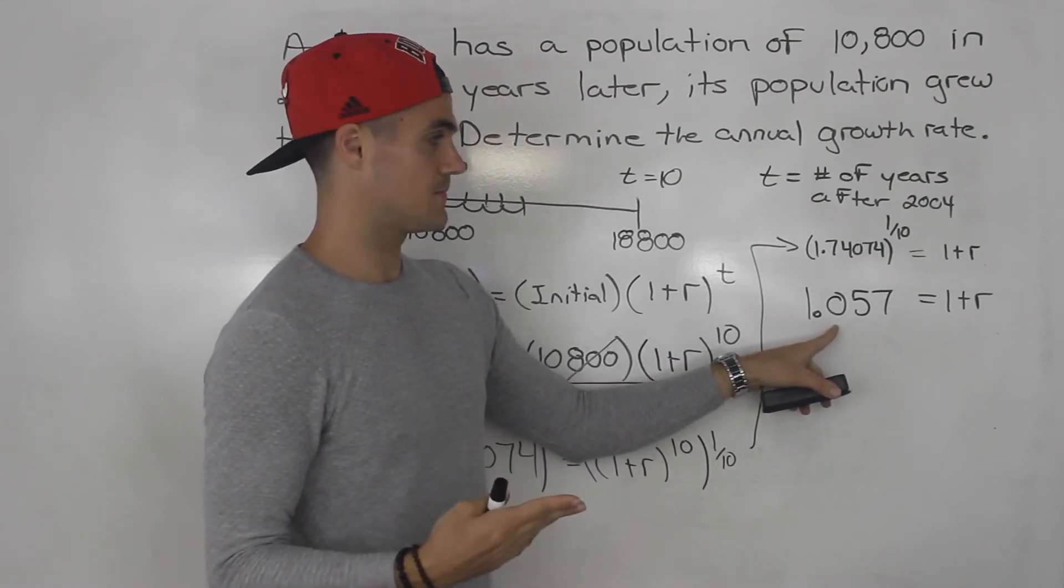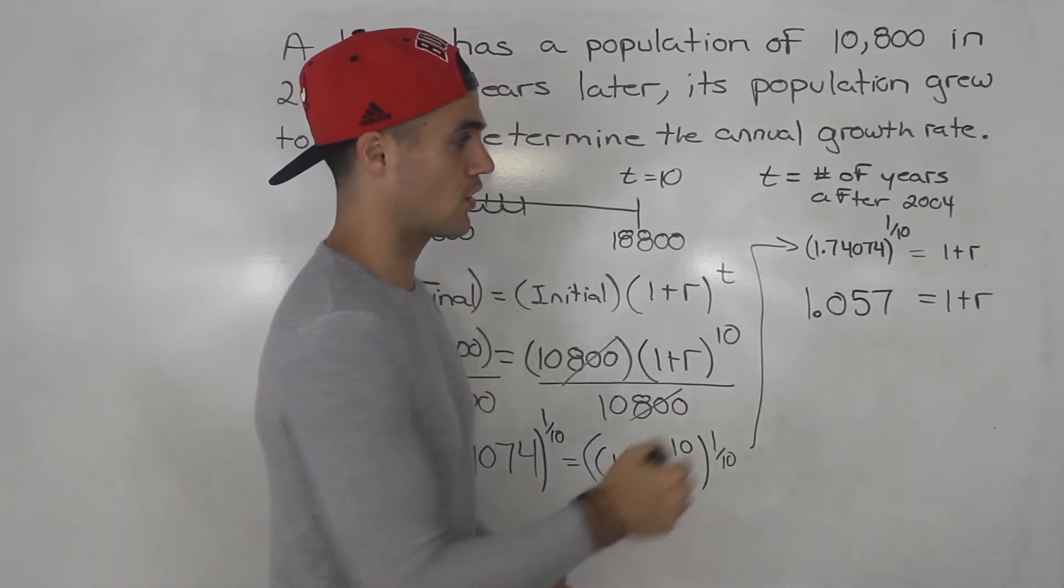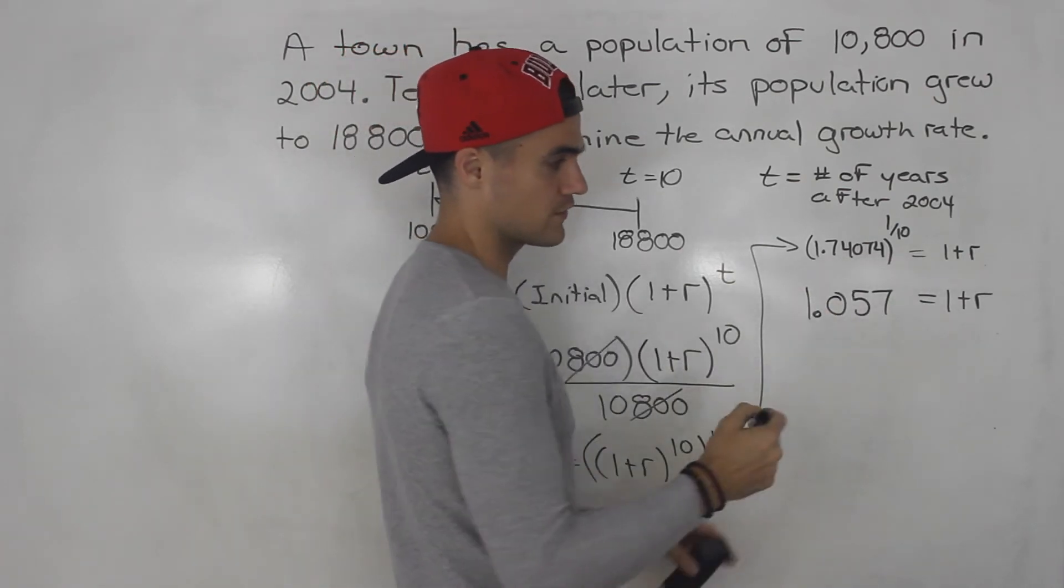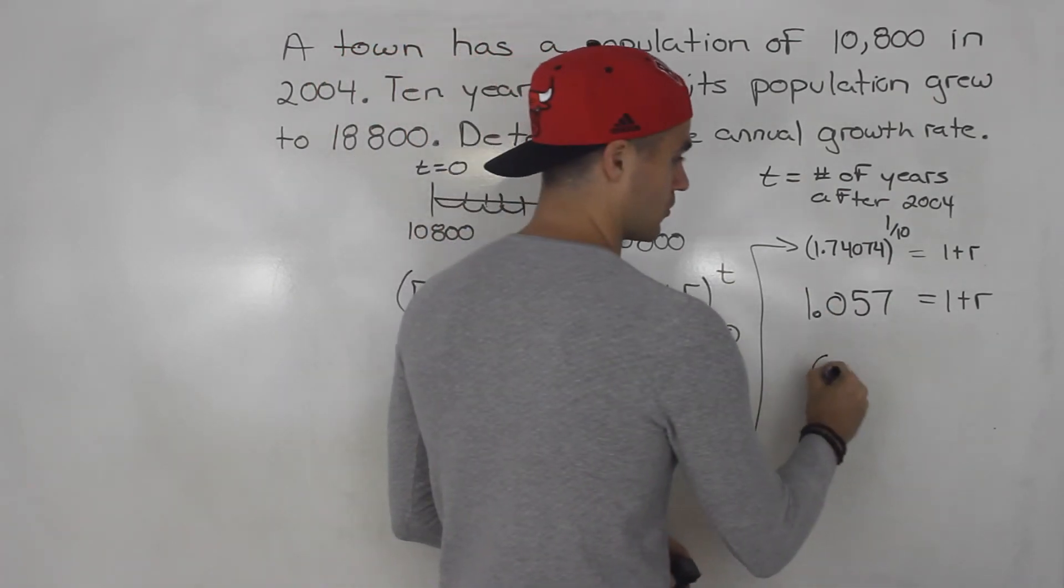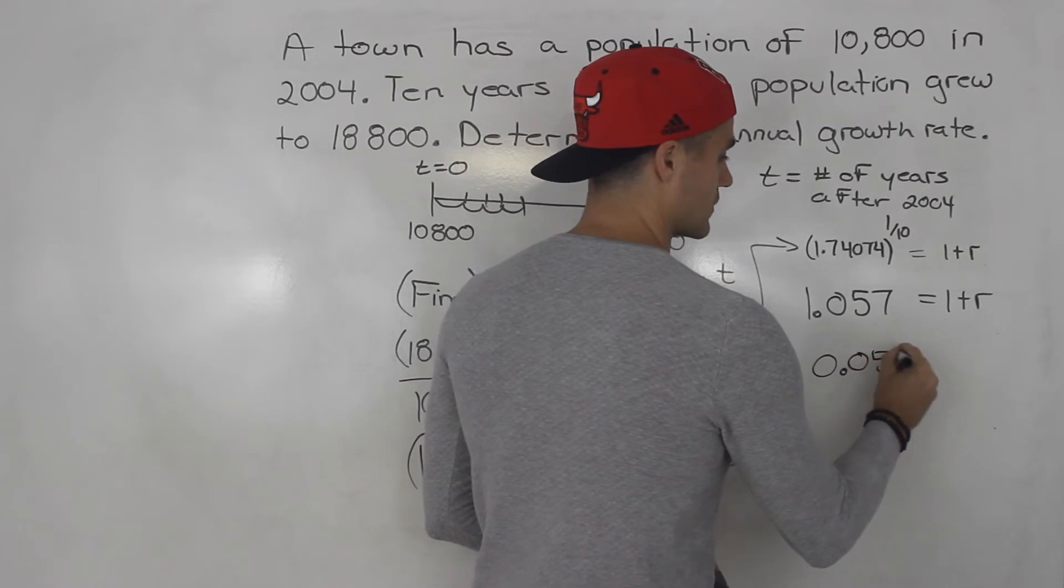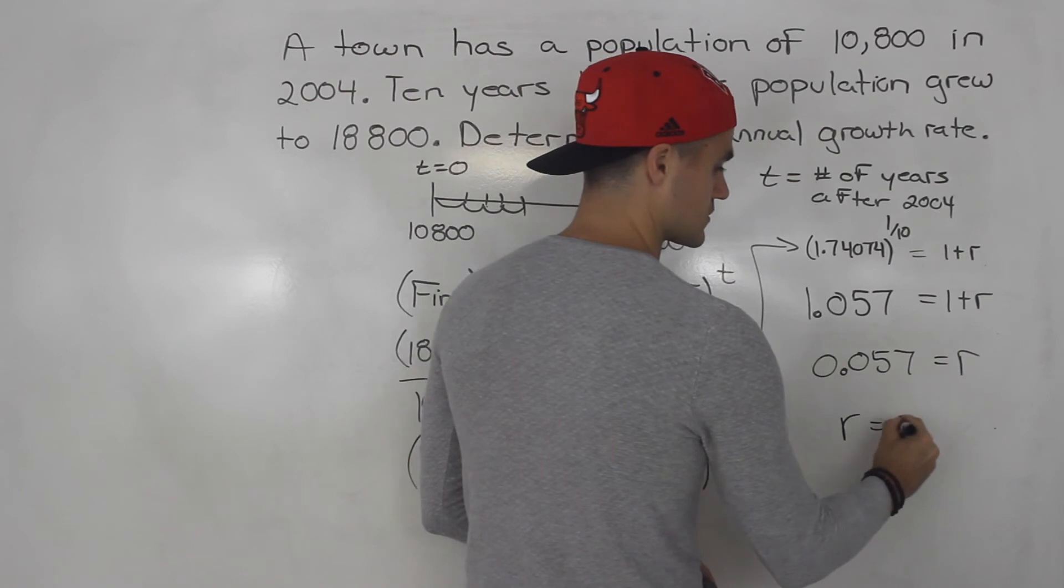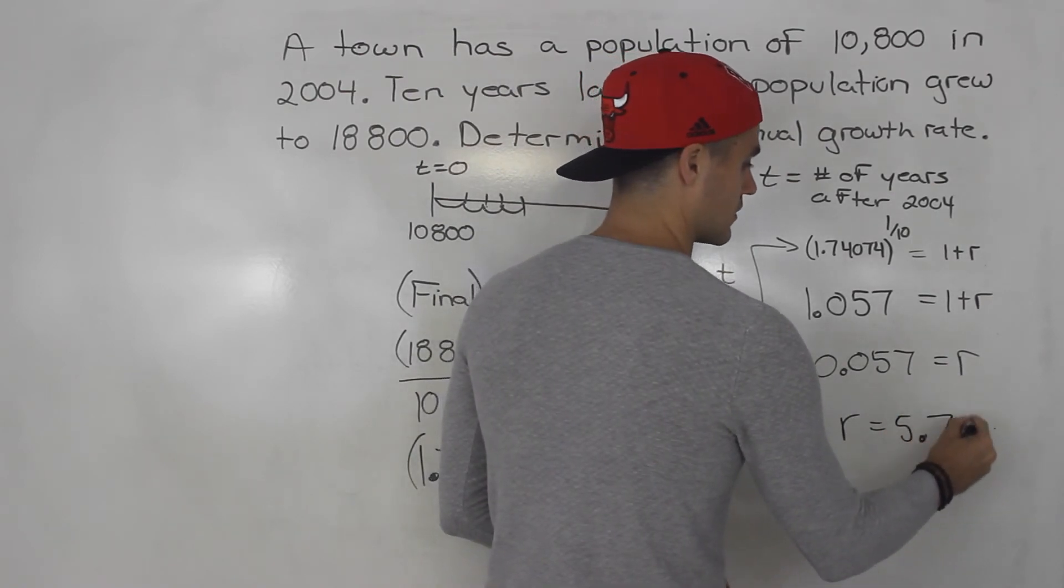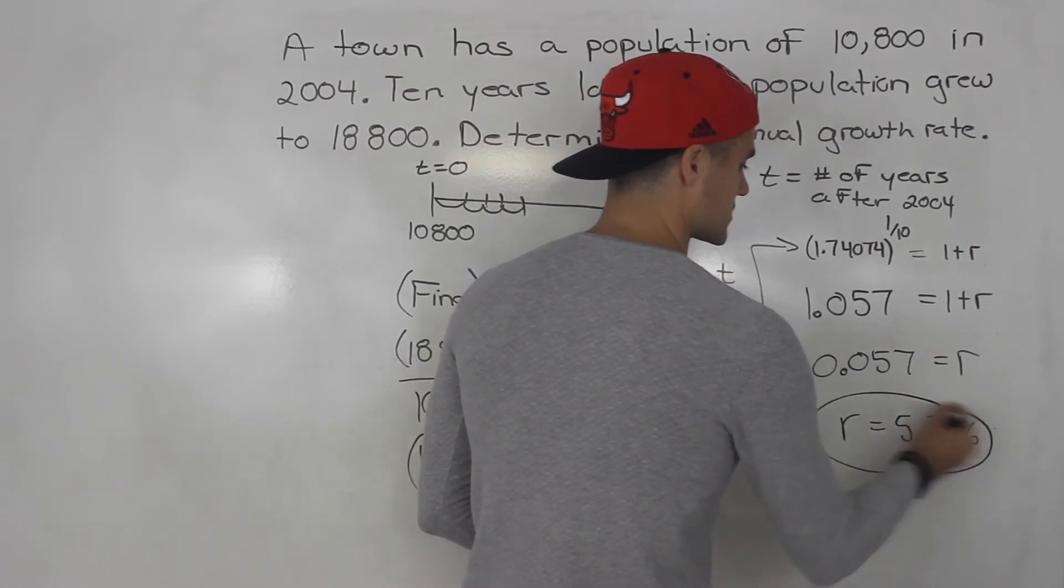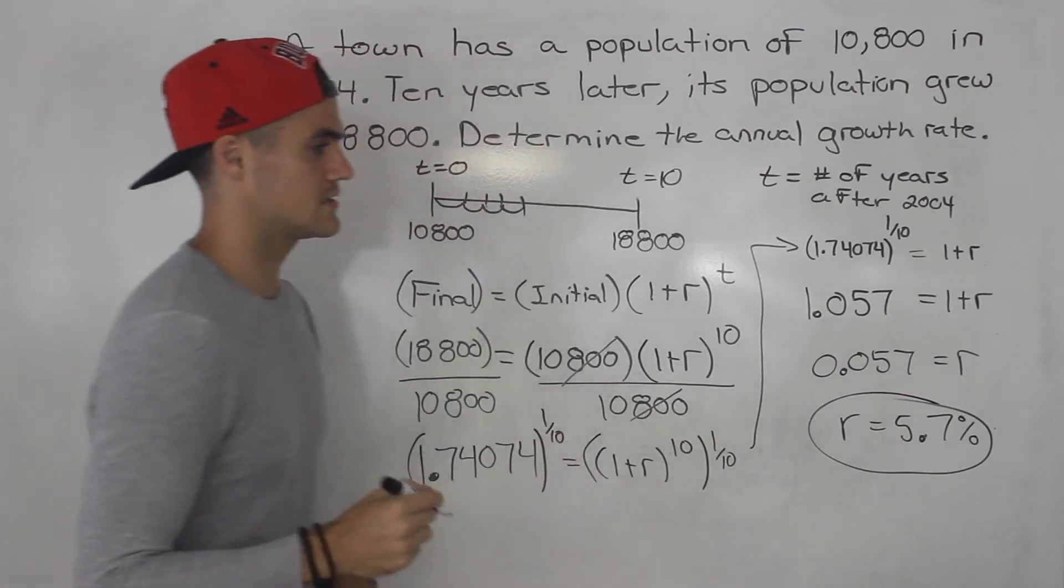So now we isolate for the r, we bring the 1 over. 1.057 minus 1, that gives us 0.057. That's going to equal r. Multiply that by 100, so r is equal to 5.7%. And that is the answer. That is the annual growth rate of this population.